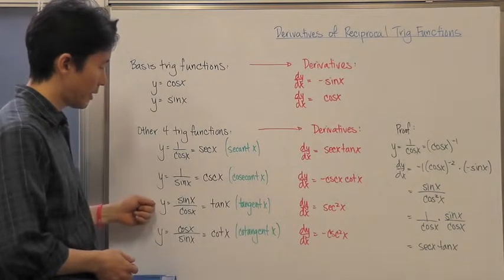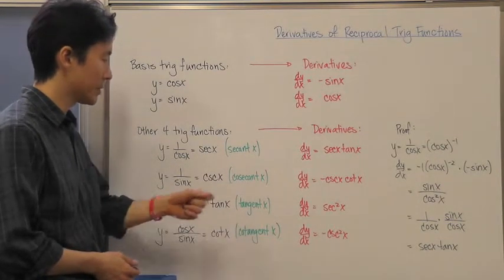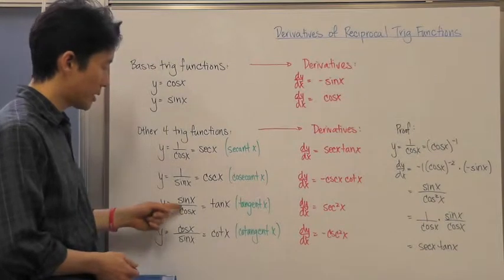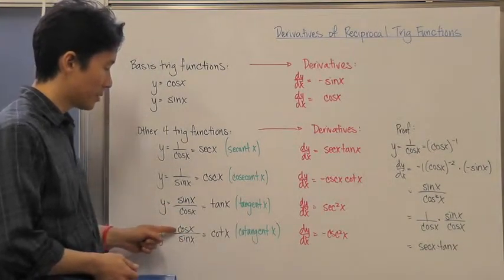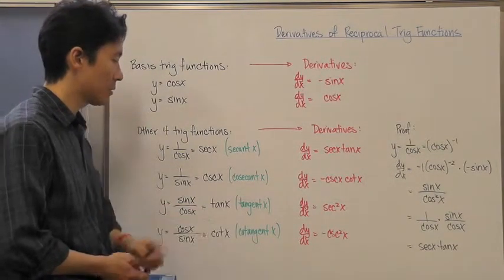And then we also know that y equals sine of x over cosine of x is equal to the tangent of x. And the reciprocal of that would be cosine of x over sine x, which is the cotangent of x.